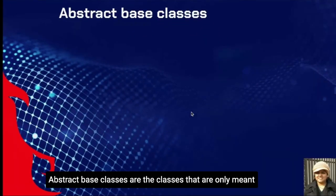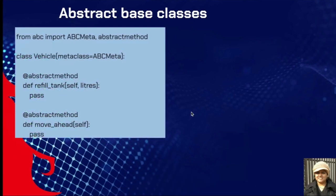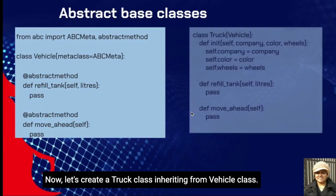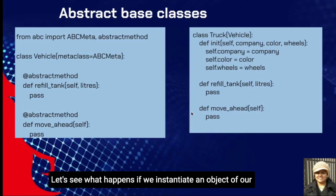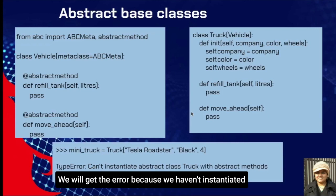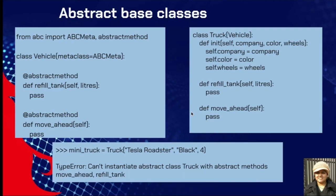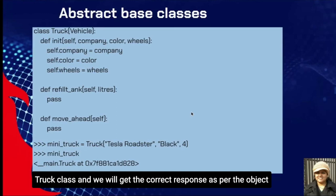Abstract base classes are classes only meant to be inherited from, not to be instantiated. Let's say we have a vehicle class — we create a truck class inheriting from it. Note that we haven't implemented the abstract methods. When we try to instantiate a truck object, we get an error because abstract methods haven't been implemented. We can fix this by defining both abstract methods in our truck class, and we will get the correct response.